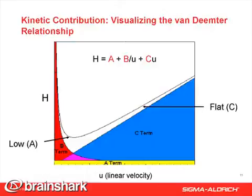Now the colored areas under the curve represent the influence of the three terms on the curve in that region. So several points are worth noting. We want the lowest minimum value of H. We want to be operating there because H is inversely proportional to N. We also want to be able to work at high flow rates to get faster separations.